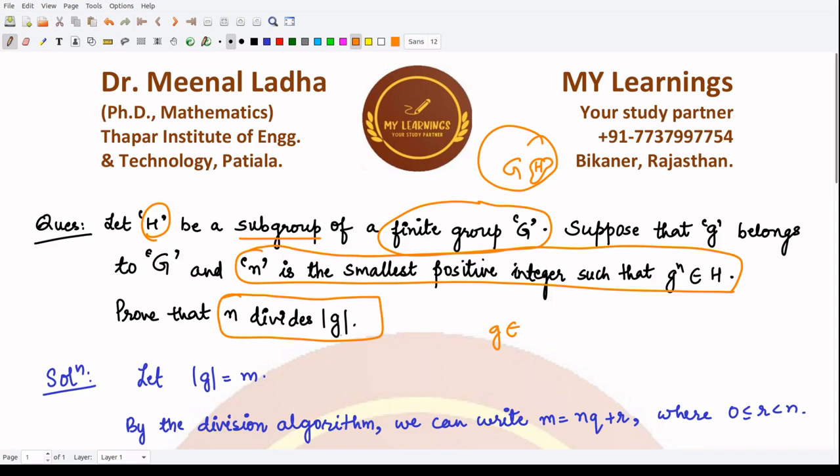So first of all, in order to prove this thing we assume that the order of g is m. Now we want to make a relationship between this n and m, so we can make use of the division algorithm.